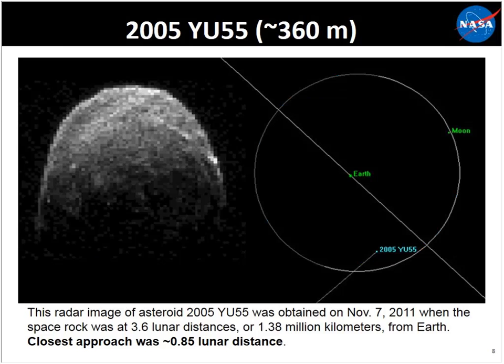Occasionally some asteroids come very close to Earth. This near-Earth asteroid, 2005 YU55, is 360 meters across — shown here as a radar image taken by a 70-meter diameter dish radar telescope. It sends a signal out to the asteroid and the signal bounces back, very similar to a police radar gun for catching speeding cars. We get a picture of the asteroid and know its precise orbit and direction of travel.